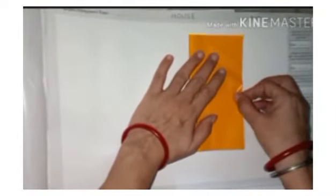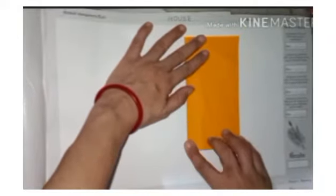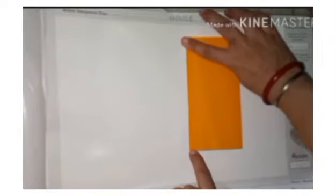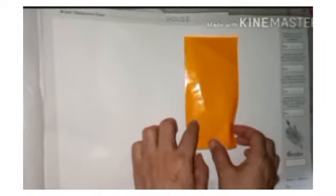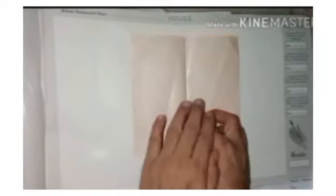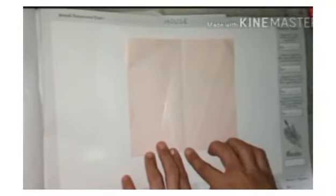Fold a craft paper from left to right side. Crease well. Unfold the craft paper. Now, you all can see the middle line.